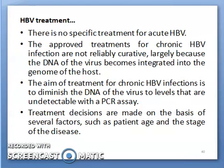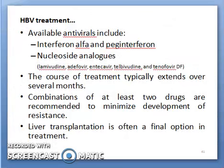There is no specific treatment for acute hepatitis B virus. For chronic HBV infection, there are currently seven approved treatments; however, none is reliably curative, largely because the DNA of the virus becomes integrated into the genome of the host. The aim of treatment for chronic HBV infection is to diminish viral DNA to levels undetectable with a PCR assay. Treatment decisions are made on the basis of several factors such as patient age, stage of disease, and co-infections with HIV, which often occur and complicate treatment.